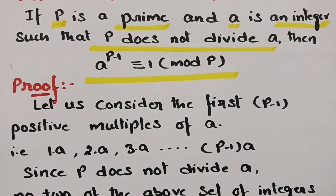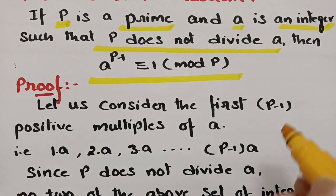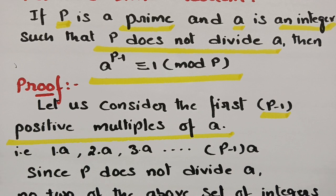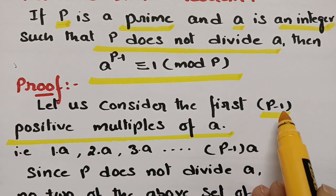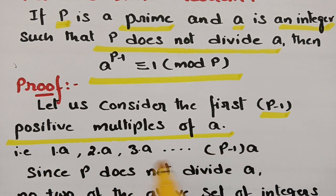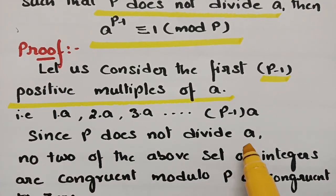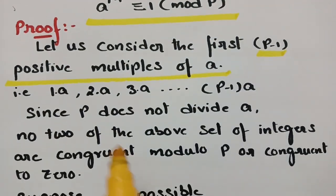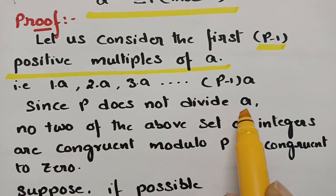In the proof, let us consider the first p−1 positive multiples of a. So we consider: 1·a, 2·a, 3·a, and so on up to (p−1)·a. Since p does not divide a — as given in the statement — we proceed.